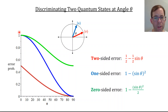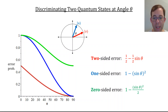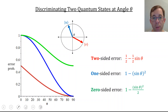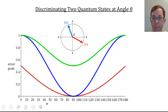You might ask: why do we only consider angles between zero and 90 degrees? After all, if you have two vectors in two dimensions, their angle can be anywhere between zero and 180. So let's think about the case where the angle between the two qubit states u and v is obtuse, as in the picture. You can do the same thing we talked about last time, and you'll find that these curves extend symmetrically from zero degrees to 180 degrees.